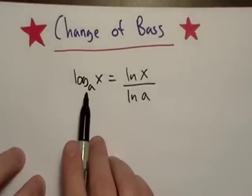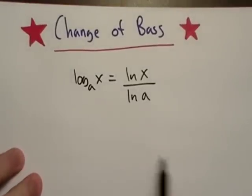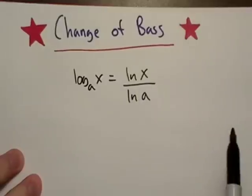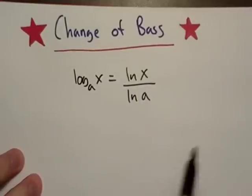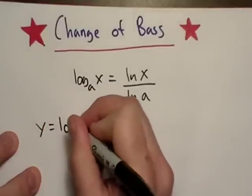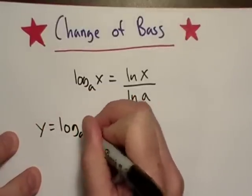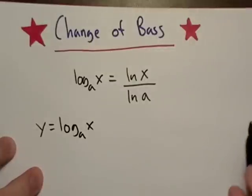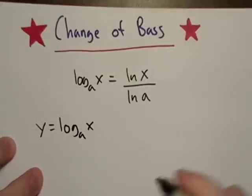So what we've got here is we've got natural log base A and we're going to change it to natural log base E using this formula right here. So we could go ahead and say that Y is equal to log base A.